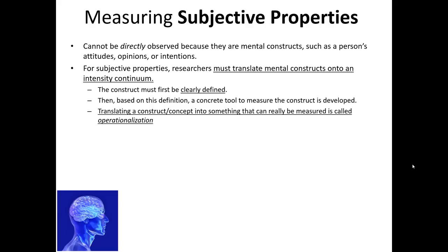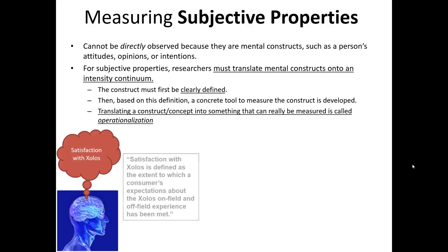That's a big word you can use to impress people at the next dinner party. We know that we can't drill a hole directly into this person's head and extract out their level of satisfaction with the Xolos. So how can we estimate what their level of satisfaction might really be? First, following the steps above, we have to define it. Satisfaction with the Xolos is defined as the extent to which a consumer's expectations about the Xolos' on-field and off-field experience has been met. This is the definition we will work from to develop our measurement system.